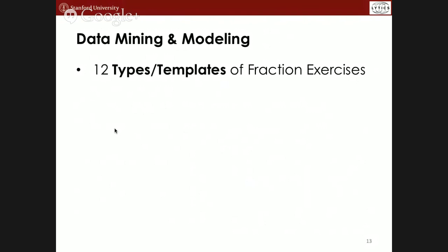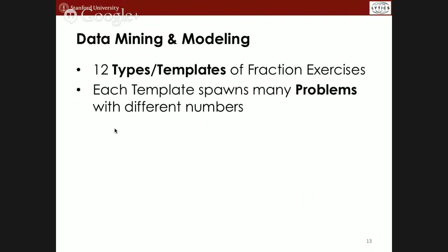If we think about adding fractions, dividing — each template can spawn many problems with different numbers. Someone might try a problem once, twice, three times, up to 20 or 30 attempts. There were about 200,000 participants, though it's much less controlled than a lab study. We actually don't know who these participants were. The best marker we have is whether they've got a coach on Khan Academy, which usually means they're associated with a teacher.